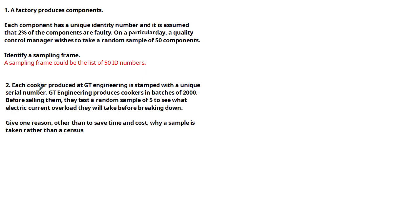Let's have a look at the next question. Each cooker produced at GT engineering is stamped with a unique serial number. GT engineering produces cookers in batches of 2000. Before selling them, they test a random sample of five to see what electric current overload they will take before breaking down. Give one reason other than to save time and cost why a sample is taken rather than a census. In these types of questions you always have to ask yourself, what is going to be the effect of the testing process in the example? In this case they're going to be testing the cookers by measuring what the electric current overload will be before it breaks down. So because the cookers are tested, they will inevitably break down. GT engineering, who are producing the cookers, wouldn't want to test all of their cookers or else they would have none left to sell. Therefore it makes sense to use a sample rather than a census because if a census was taken, there would be no cookers left to sell.